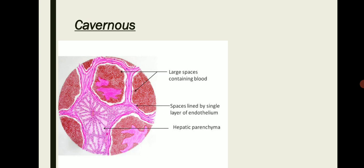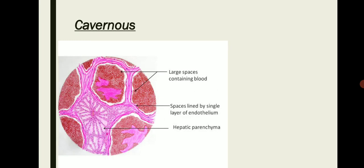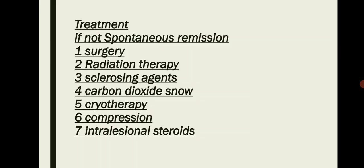In cavernous hemangioma, you will notice very large spaces containing blood, as opposed to the small spaces in capillary hemangioma. These large spaces are also lined by a single layer of endothelium. The histologic example shown is taken from hepatic parenchyma — a liver specimen.